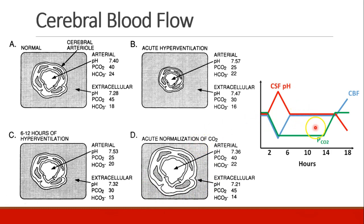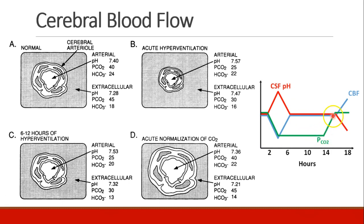Here's a diagram that shows a similar idea. We've started hyperventilating a patient, so the pCO2 comes down, the pH of the CSF goes up, and cerebral blood flow has also gone down. But by about 6 hours, the pH has started to come back to baseline and cerebral blood flow has come back towards baseline, even though we're still maintaining this new low pCO2. When we return pCO2 back to baseline, we get a compensatory increase in cerebral blood flow higher than at baseline and a decrease in CSF pH.